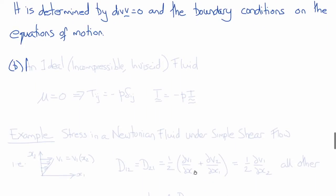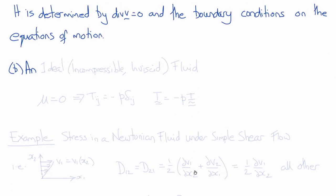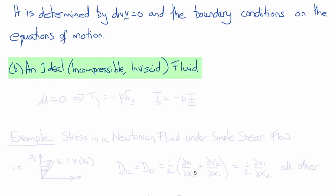Another special case is the ideal fluid, which means it is both incompressible and inviscid. Inviscid means the viscosity is zero, so that reduces to T_ij is equal to minus p delta_ij, or T equals minus p times I.